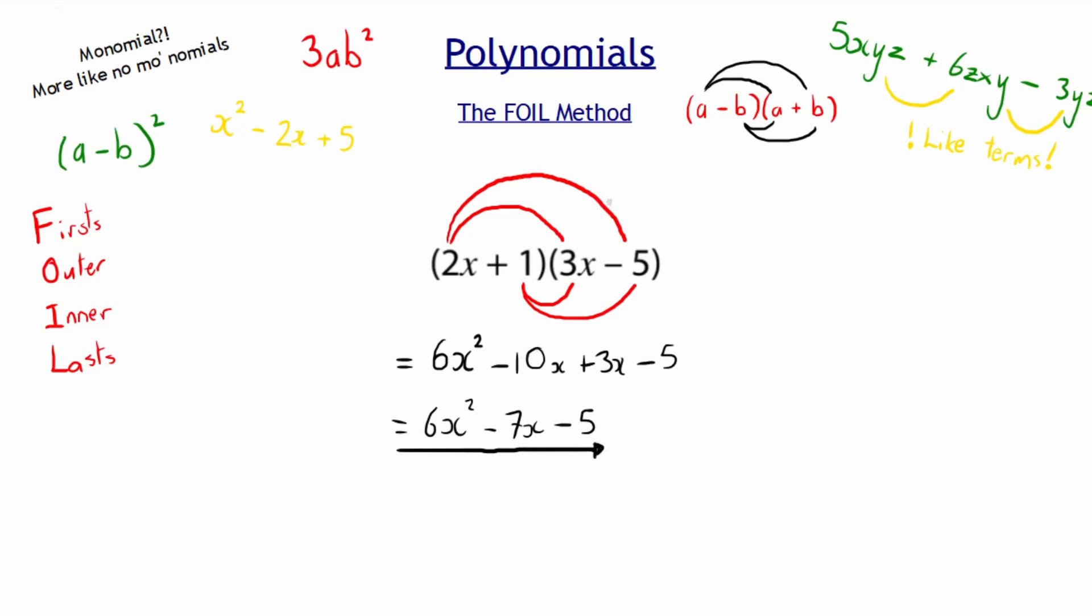This method, ladies and gents, is called the FOIL method. You multiply the first terms, then the outside terms, then the inside terms, then the last terms. And by doing that, you make sure that everything in this first bracket is being multiplied with everything in the second bracket.